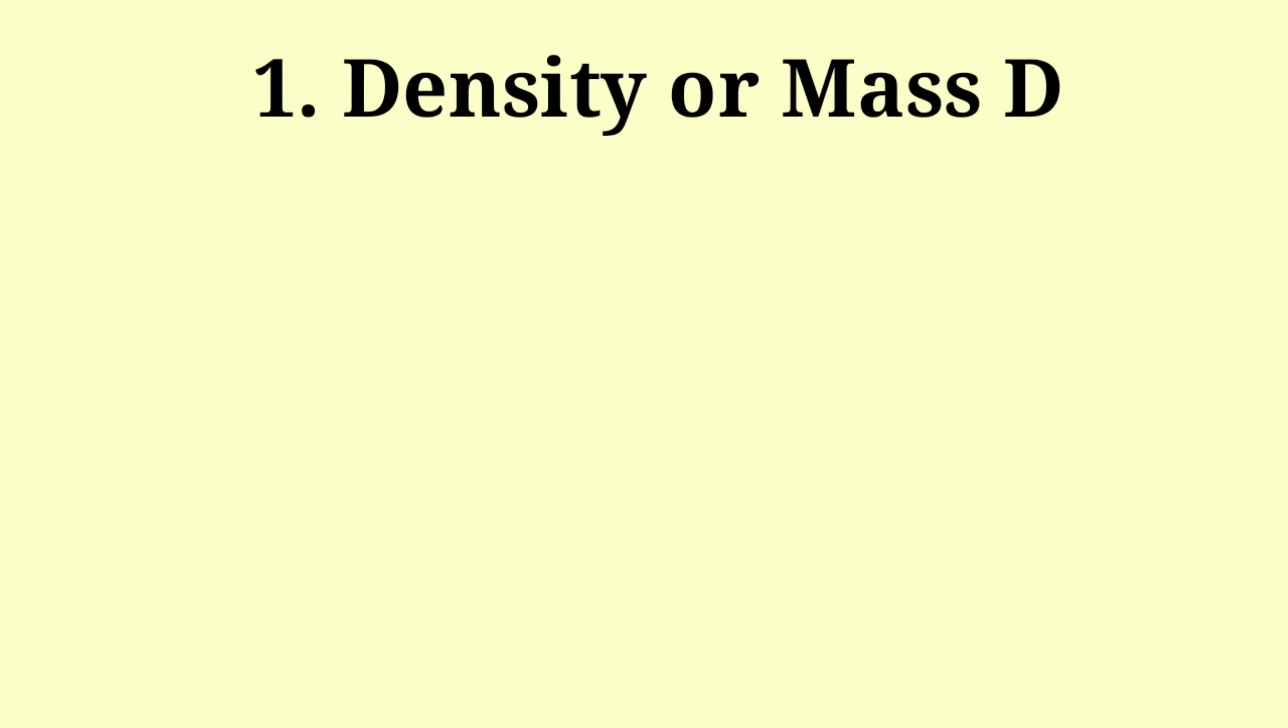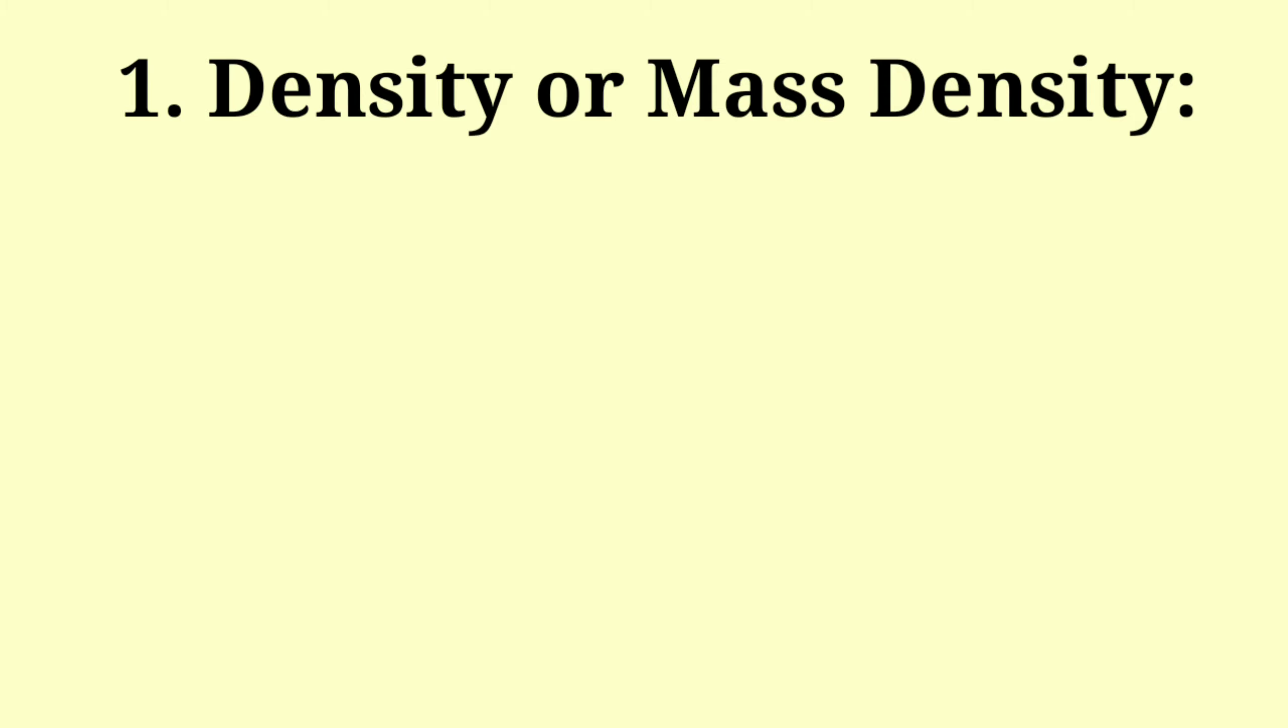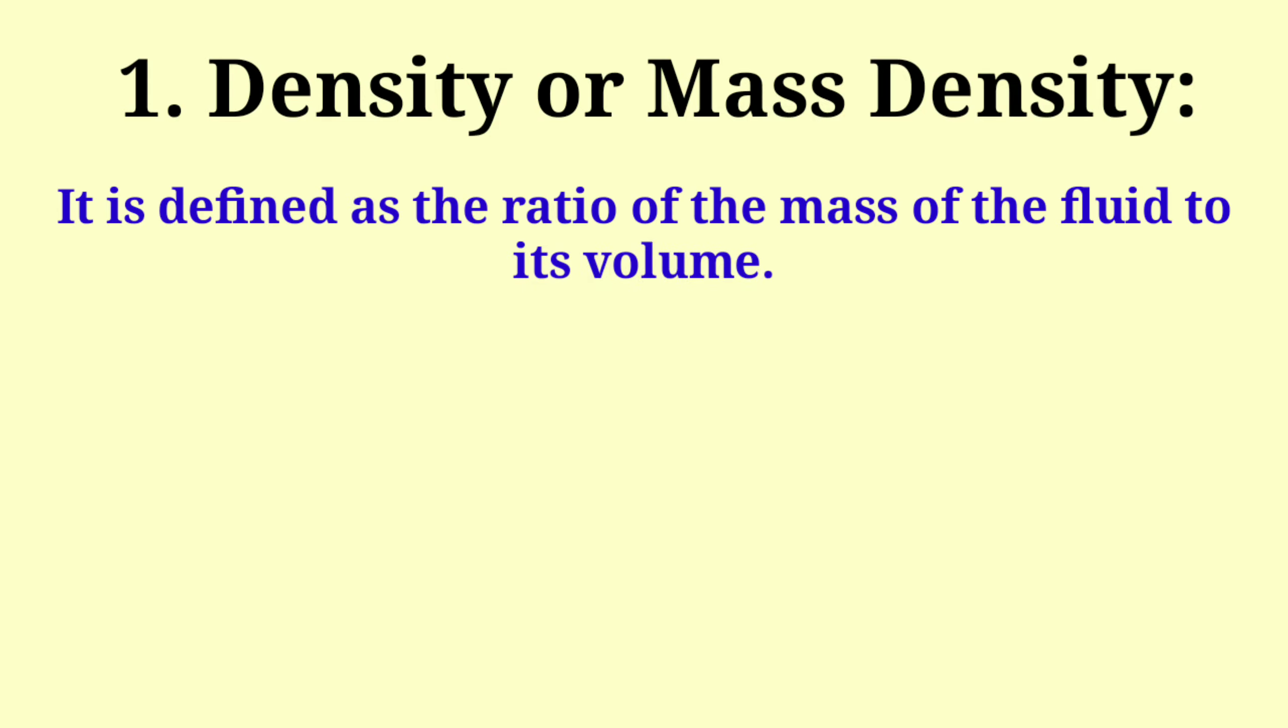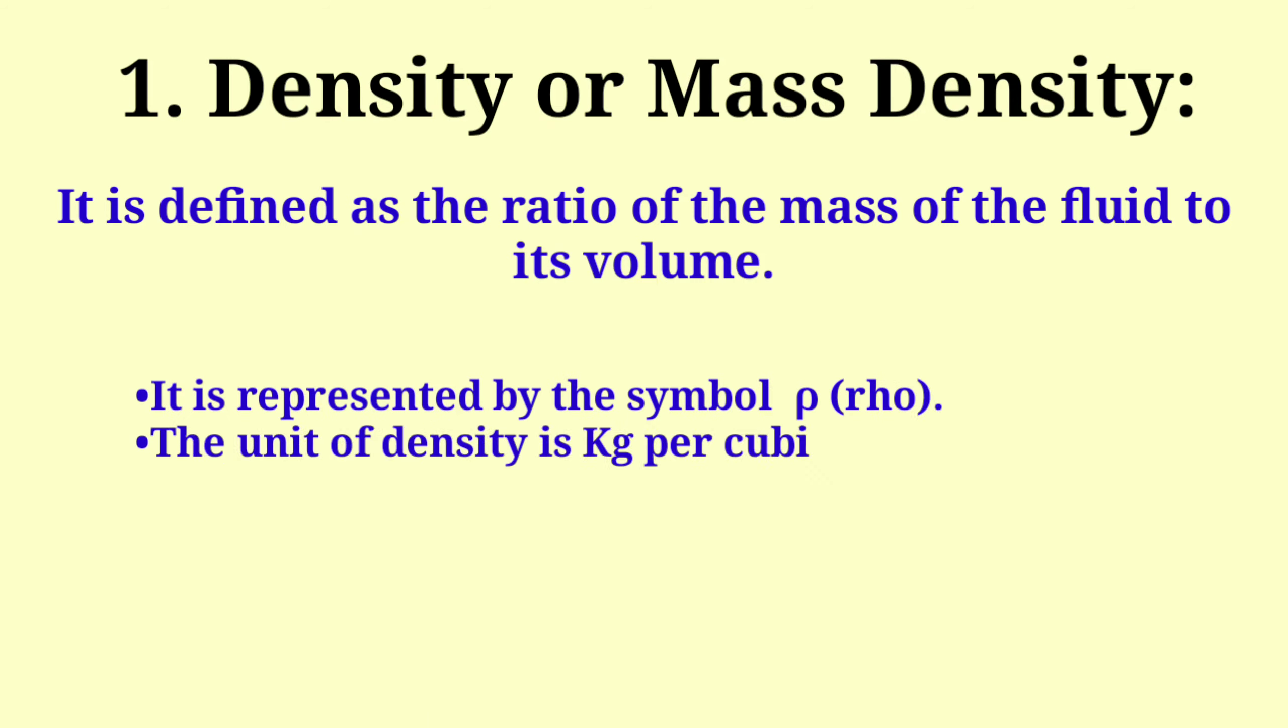Density or mass density. It is defined as the ratio of the mass of the fluid to its volume. It is represented by the symbol ρ (rho). The unit of density is kg per cubic meter.